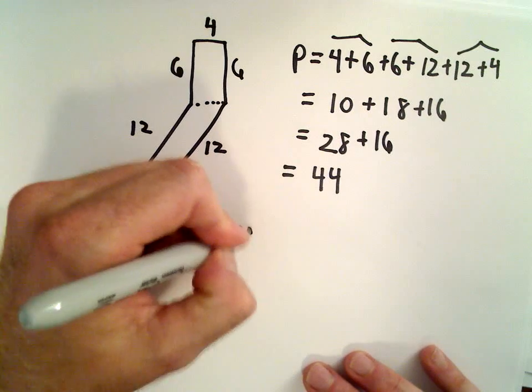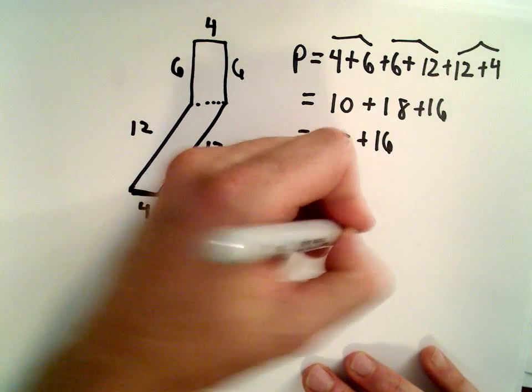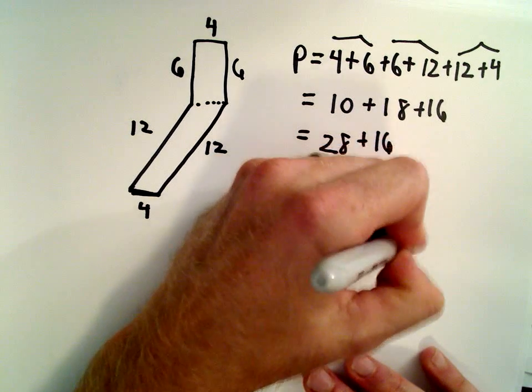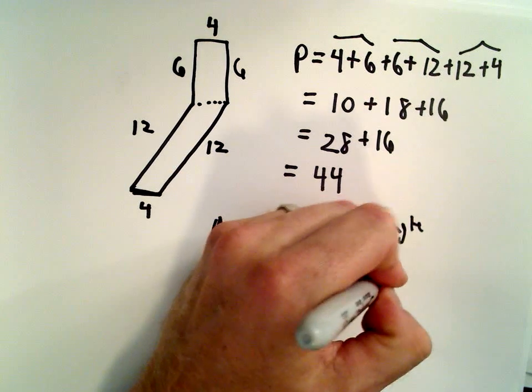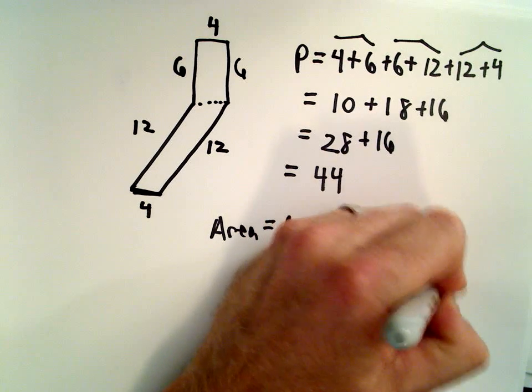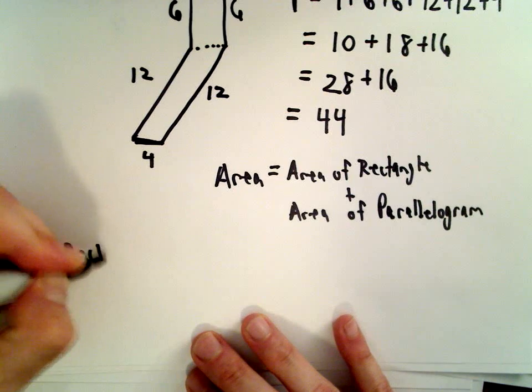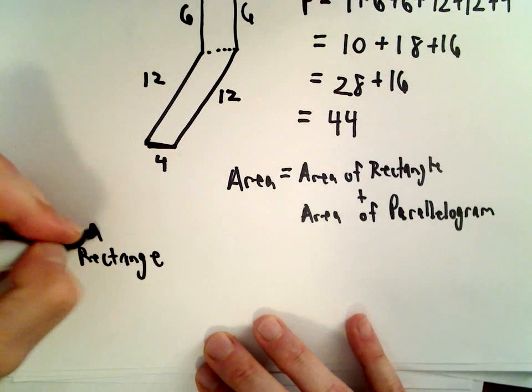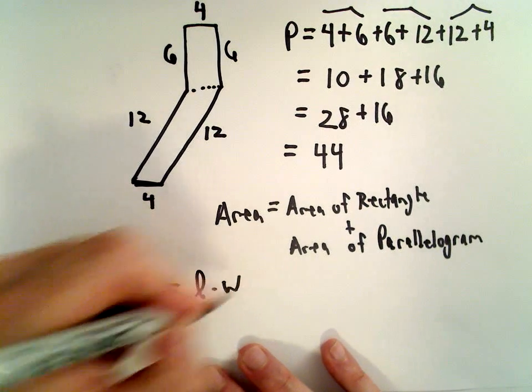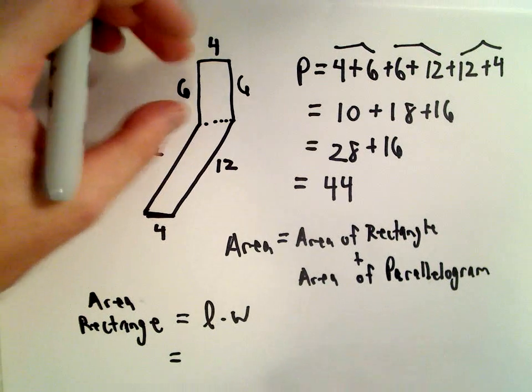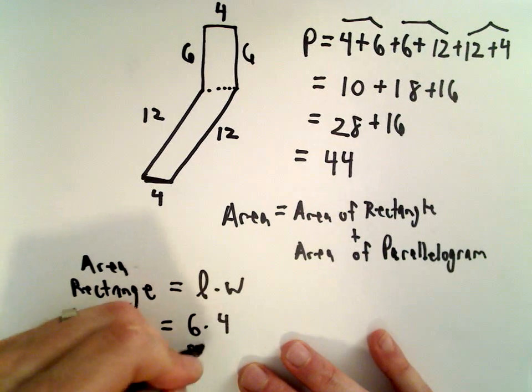So let's figure out the area. So the area is going to be the area of the rectangle plus the area of the parallelogram. Okay, so the area of the rectangle, well, the area of the rectangle, that's just the length times the width. Label it however you want to, it's going to be 6 multiplied by 4. So the area of the rectangle is going to be 24 units.